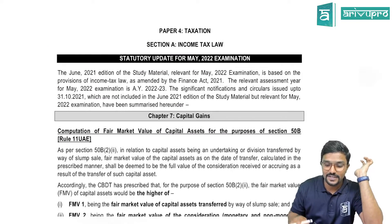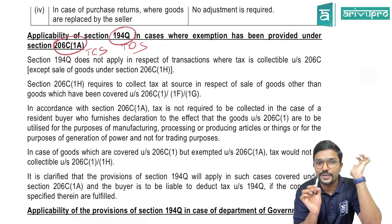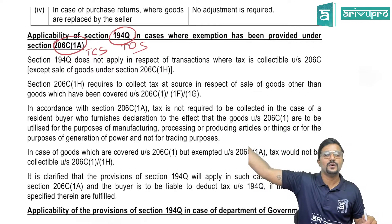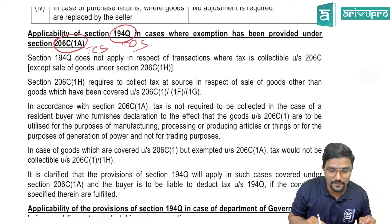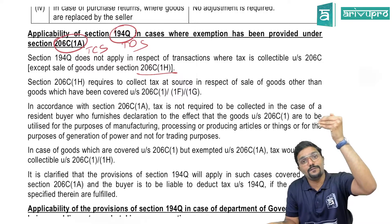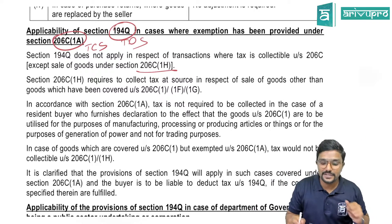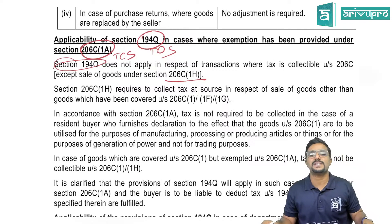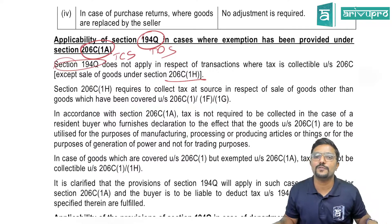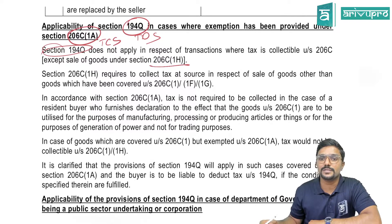The clarification given here is: Section 194Q does not apply in respect of a transaction where tax is collectible under Section 206C — except for sale of goods under Section 206C(1H). When it comes to 206C(1H), we first check 194Q; if that is not applicable, only then we go to 206C(1H). So 194Q will not be applicable wherever TCS is collectible under any section of 206C — if TCS is collected by the seller, TDS is not applicable for the buyer under Section 194Q.